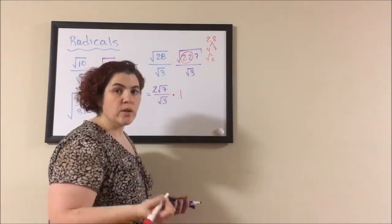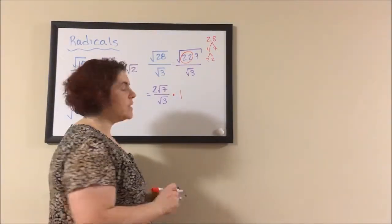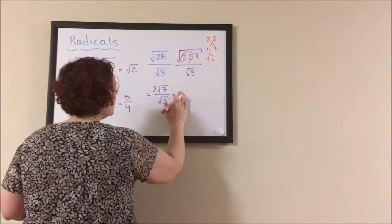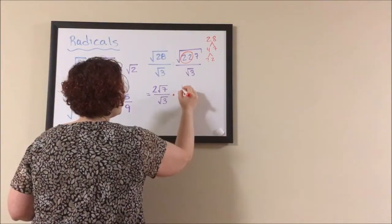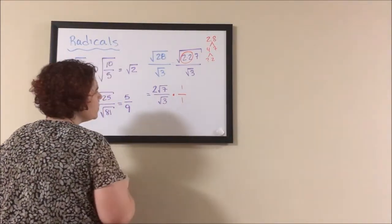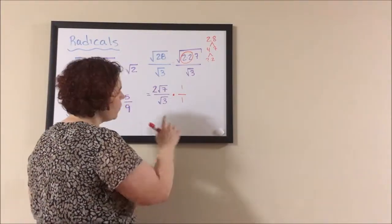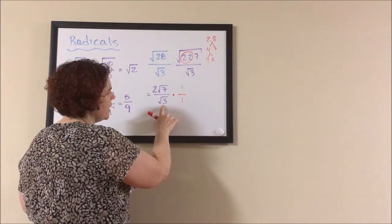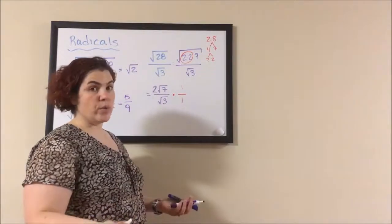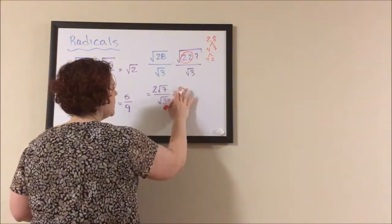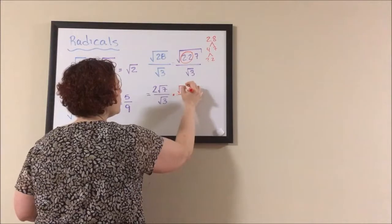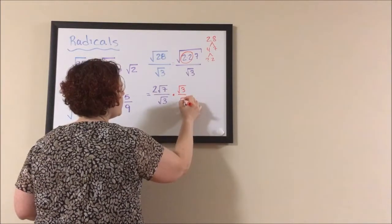Because if you multiply a fraction by 1, you don't change it. 1 times anything is itself. But instead of just 1, we'll multiply it by 1 over 1. This is getting closer to what I want. But what I really want is something that will take that square root of 3 and make the square root go away. So what I really want is the square root of 3 over the square root of 3.